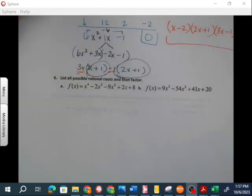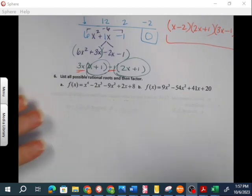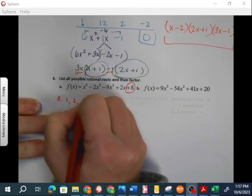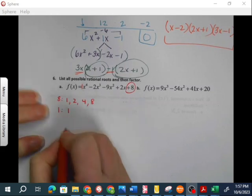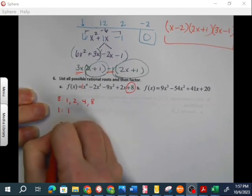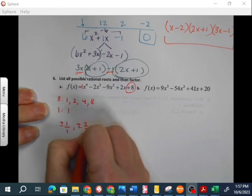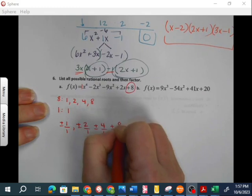Alright, listing all the possible rational roots. So remember, that's our P and Q list. So I'm going to take 8, write all the factors of 8, take my lead coefficient of 1, and write the factors of 1. So my possible list is positive and negative 1 over 1, positive and negative 2 over 1, positive and negative 4 over 1, positive and negative 8 over 1.